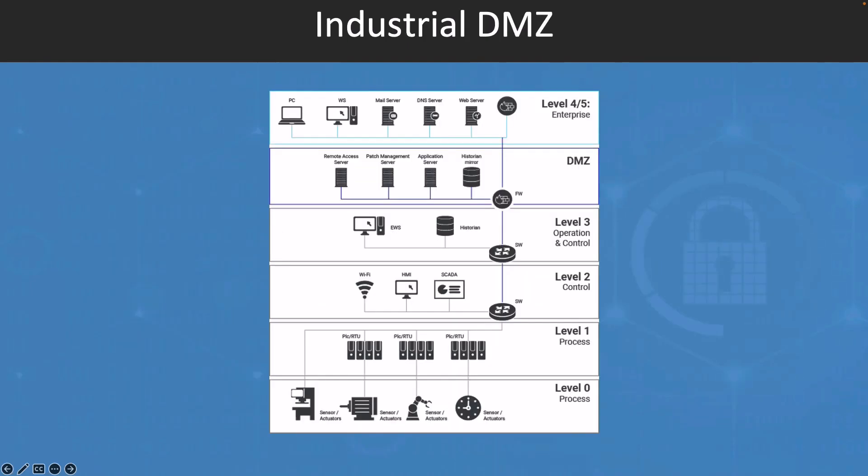Between level 3 and level 4, there is a zone called IDMZ or an industrial DMZ. It creates a barrier between the IT and OT networks. Solutions like jump boxes can provide limited access to industrial control systems from the IT environment, but this buffer also helps prevent infections coming from the IT environment and spreading over to the OT or vice versa. It's very important to have this industrial DMZ between the IT and OT networks.